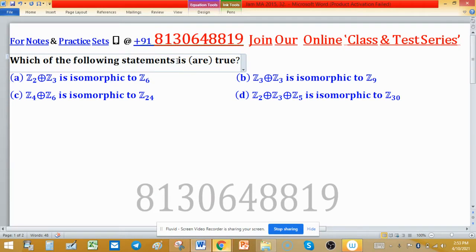Which of the following statements are true? More than one statement can be true. Option A is Z2 direct sum with Z3 is isomorphic to Z6, and there are other options as well.